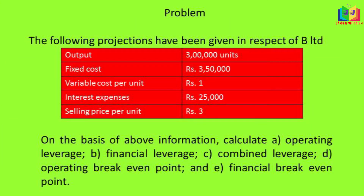Now we will see one problem. The following projections have been given in respect of B Limited: Output 3 lakh units, fixed cost rupees 3 lakh 50,000, variable cost per unit 1 rupee, interest expenses rupees 25,000, selling price per unit rupees 3. On the basis of above information, calculate operating leverage, financial leverage, combined leverage, operating breakeven point and financial breakeven point.